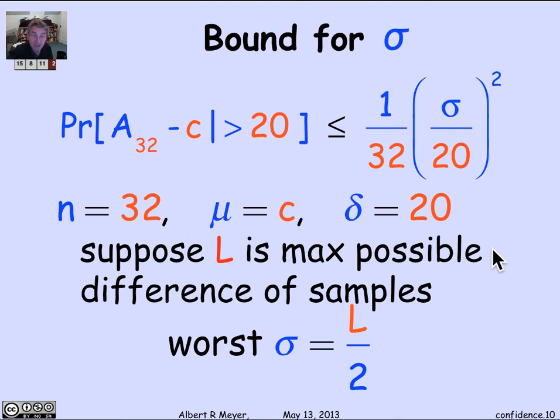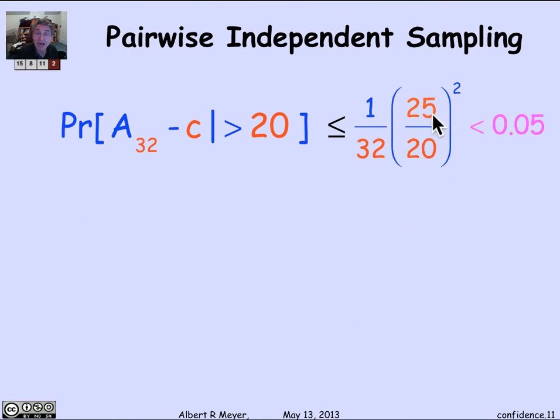You can check that algebraically, but for now, let's just take that as a fact. If you know that your measurements are going to differ by at most L between max and min, the standard deviation can't be more than L over 2. And if we know that L is 50, then I got a number finally to plug in because now I can plug in 25 for σ.